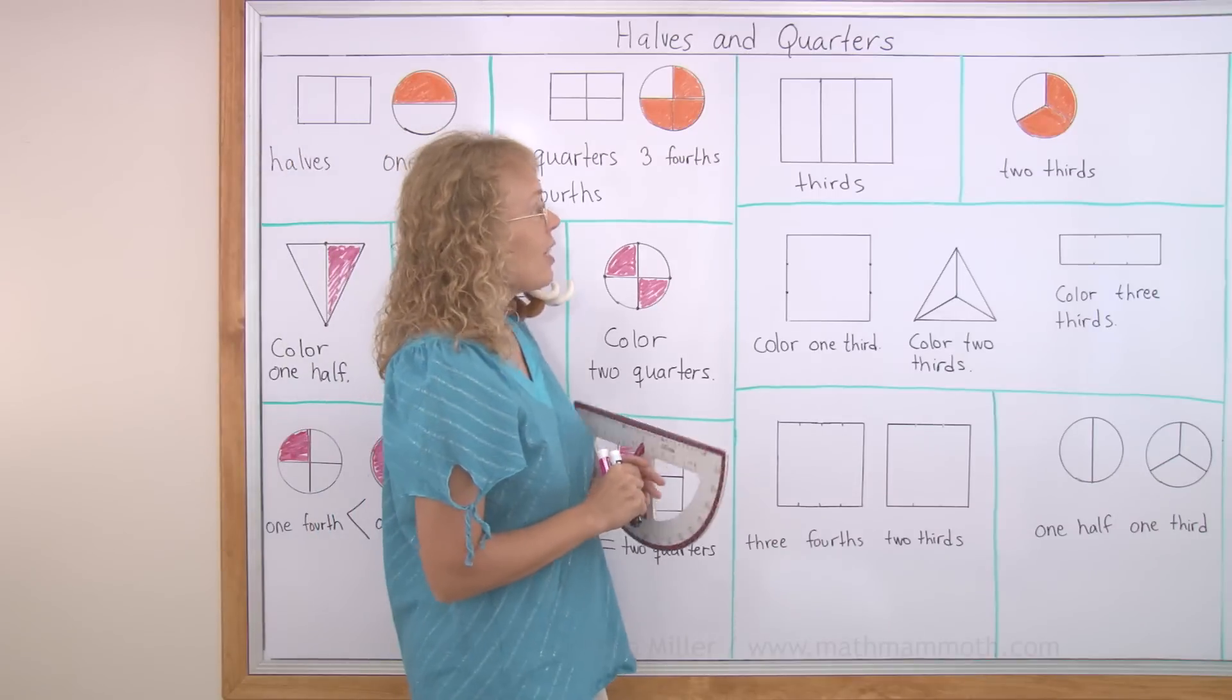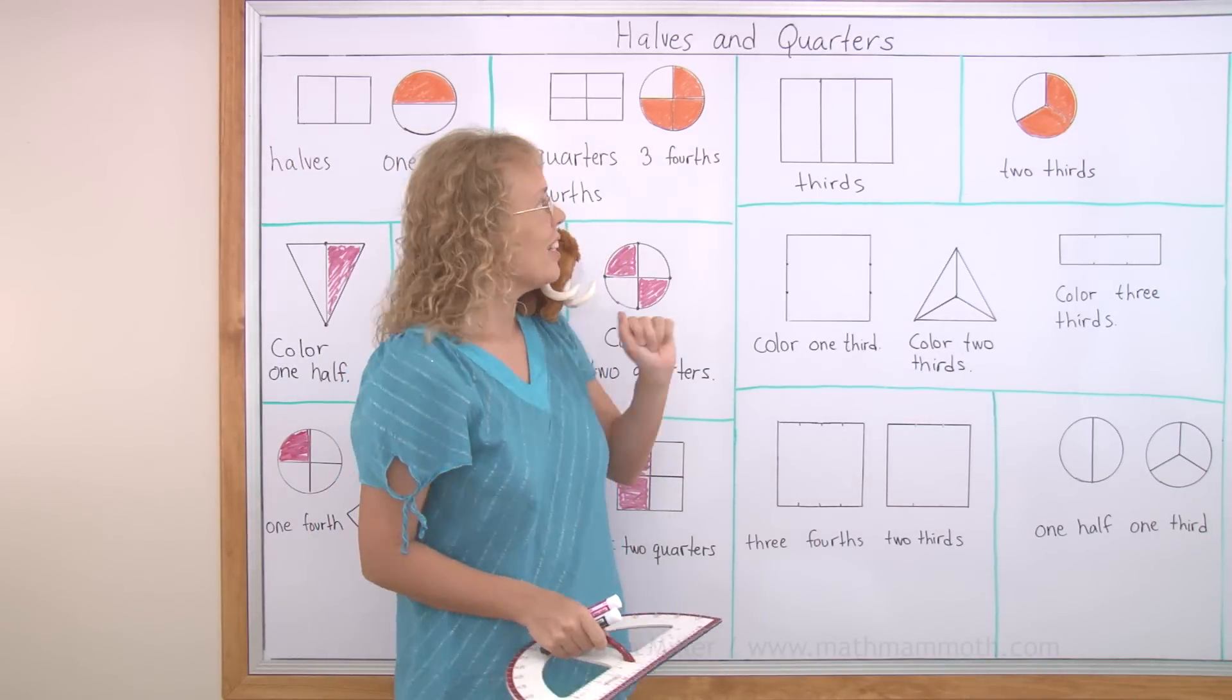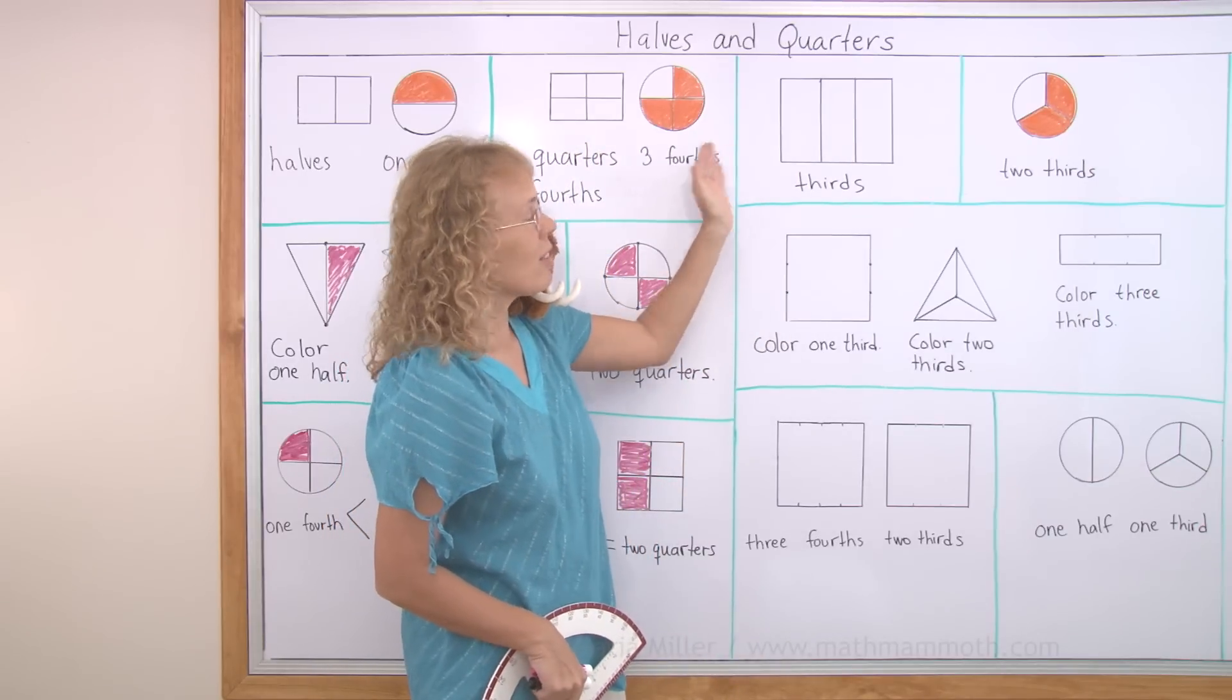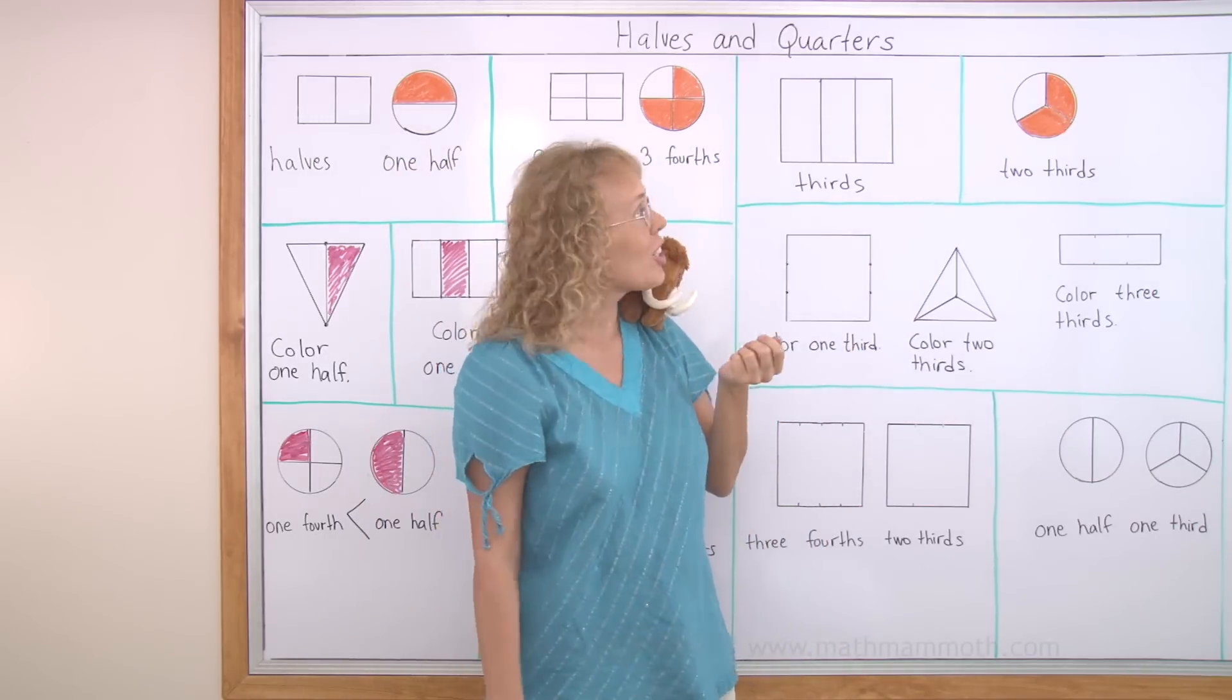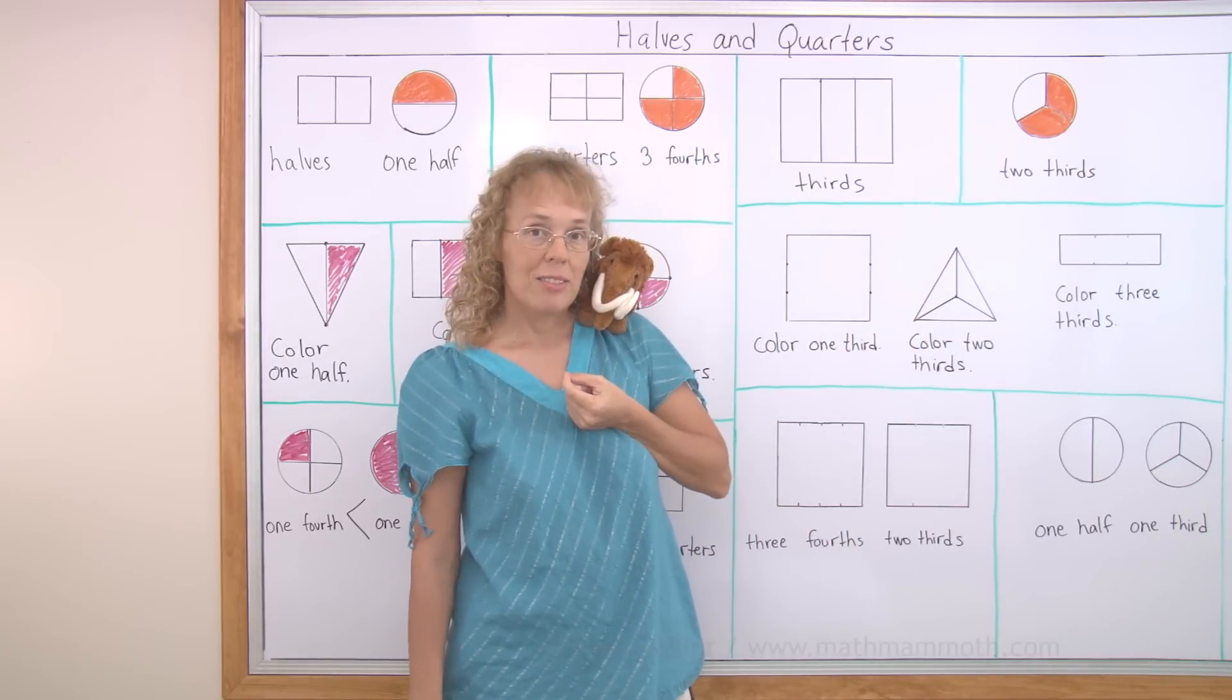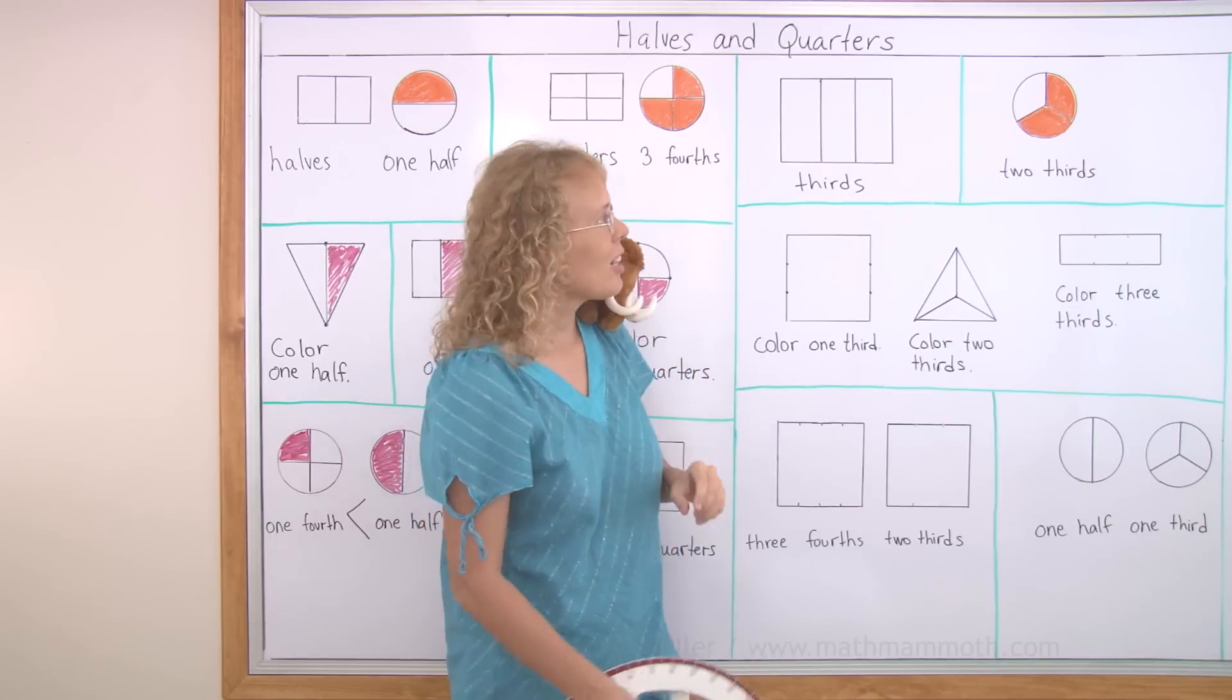Next we're going to study thirds. If you divide something into three equal parts, then each part is one third. This shape here, this rectangle is divided into thirds. Okay. Here the circle is divided into thirds and two thirds are colored. And what part is not colored? One third. One third is not colored.